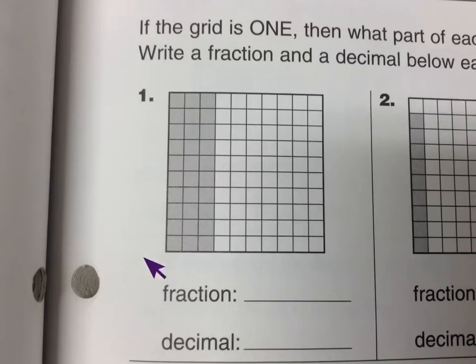So for number one, we need to take a look at this little square. And if this grid is equal to one, then what part of the grid is the colored-in part here? So first let's do the fraction.